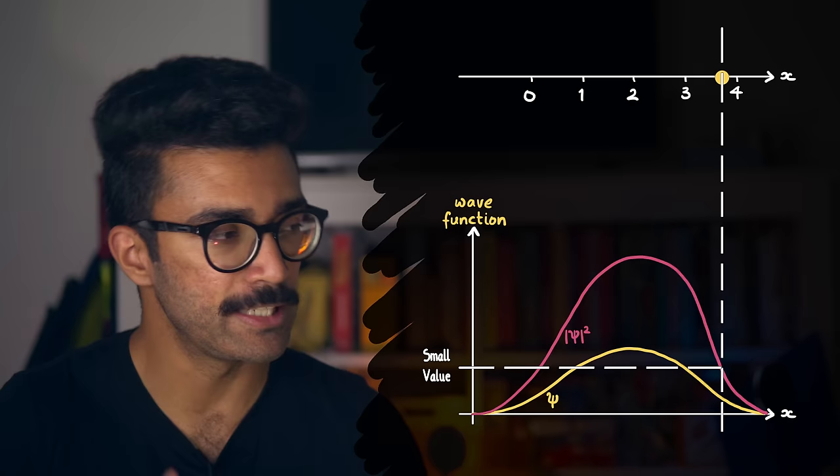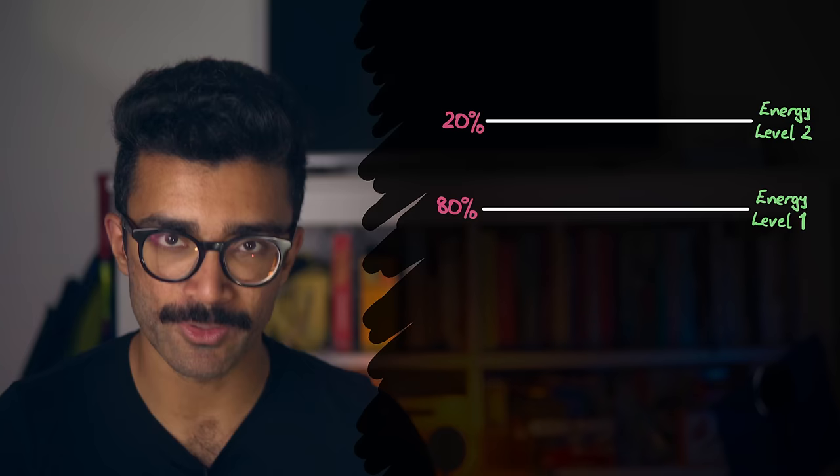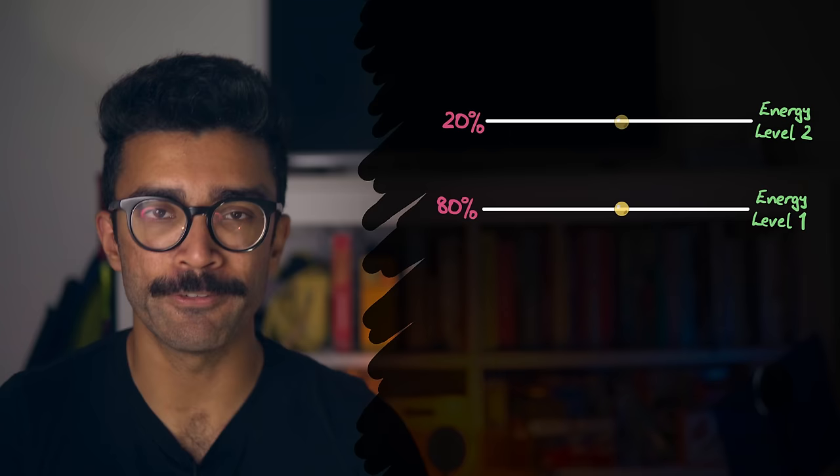And we can do a mathematical transformation on our wave function, so that instead of giving the likelihood of finding the electron at different points in space, the wave function will now give us the likelihood of finding the electron with different amounts of energy, or to put it another way, the likelihood of finding our particle in different energy levels.